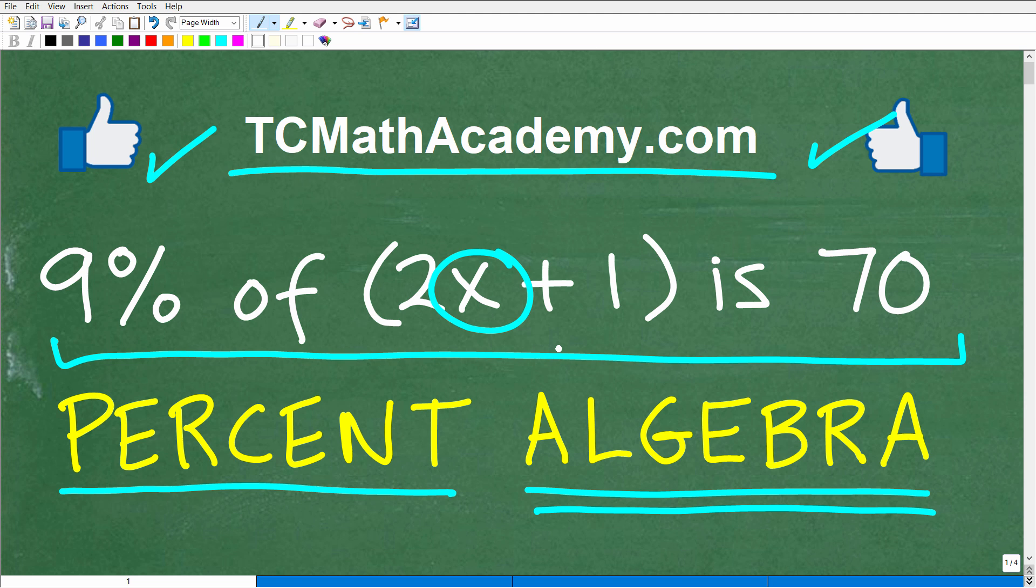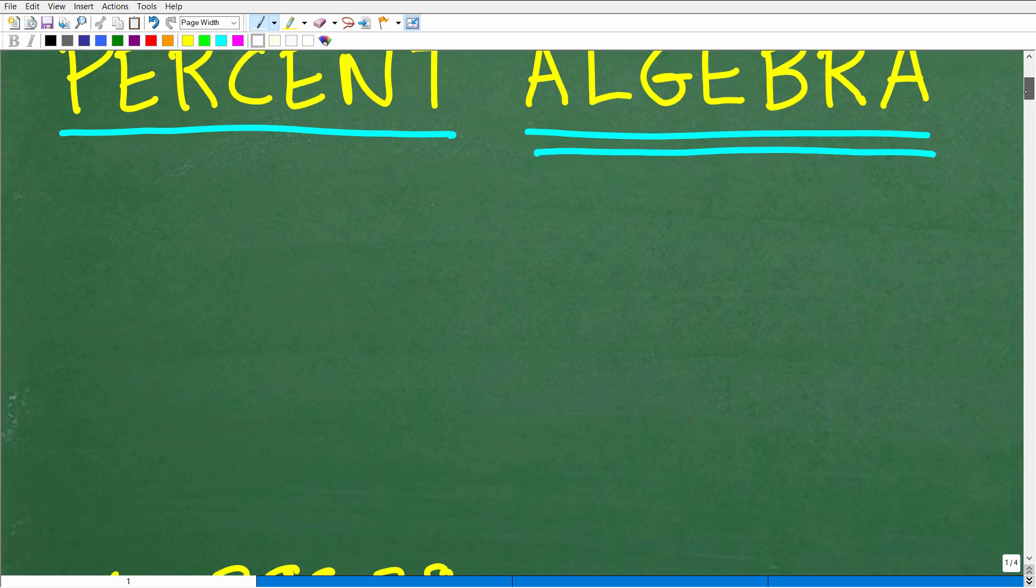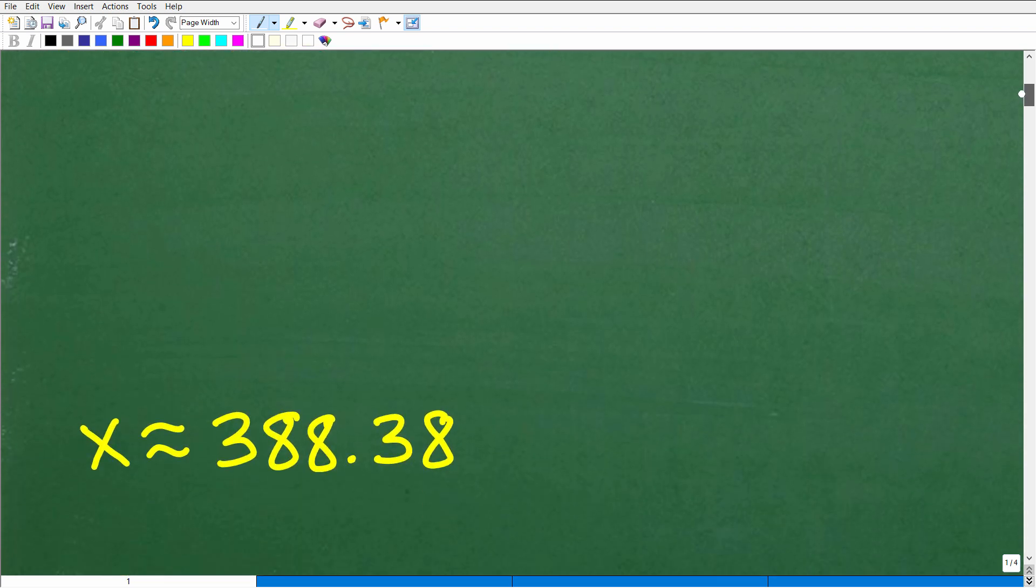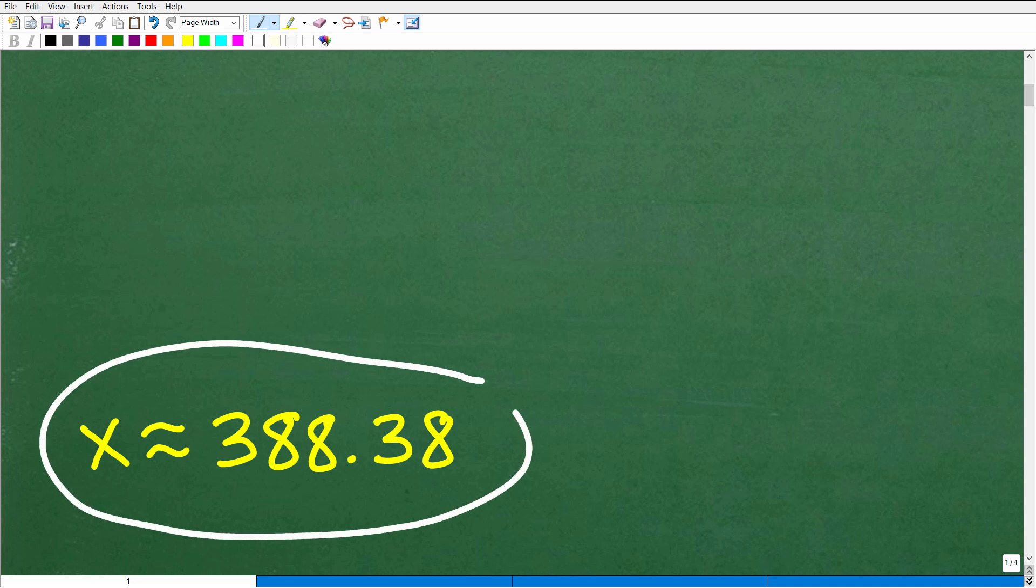Okay, so here is the problem. If you're not ready to see the solution yet, just pause the video. But if you have your answer ready, let's go ahead and take a look at the solution. The answer is the following: x is approximately equal to 388.38.